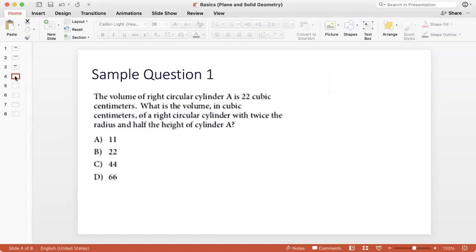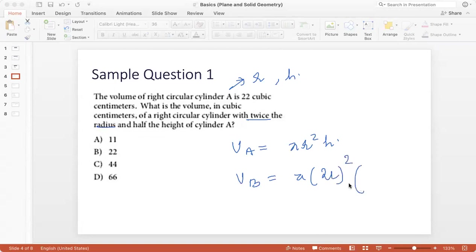The volume of right circular cylinder A is 22 cubic centimeters. What is the volume in cubic centimeters of a right circular cylinder with twice the radius and half the height of cylinder A? So let's say the radius of A is R and the height is H. So the volume of A is pi R squared H. The formula of a volume is pi R squared H. Now, I have to find the volume of another cylinder. Let's say B. So VB is going to be pi, the radius of this is twice the radius of A. So 2R the whole squared and its height is half the height of A. So H by 2.